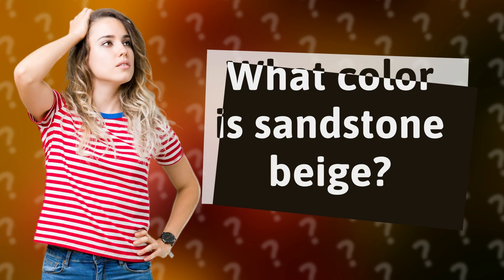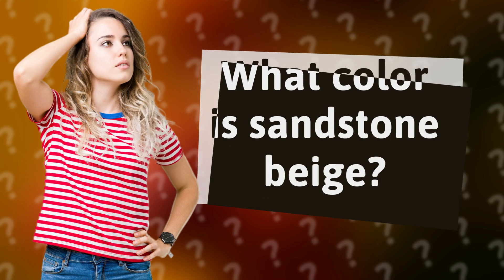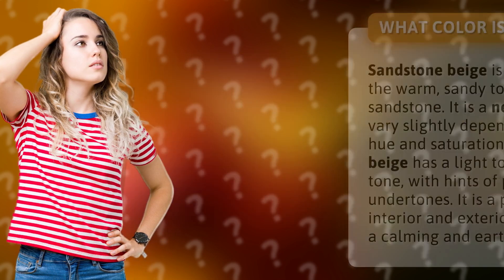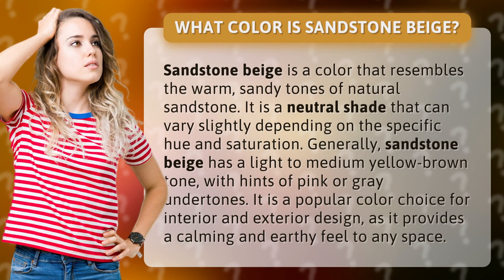What color is Sandstone Beige? Sandstone Beige is a color that resembles the warm, sandy tones of natural sandstone. It is a neutral shade that can vary slightly depending on the specific hue and saturation. Generally, Sandstone Beige has a light to medium yellow-brown tone, with hints of pink or gray undertones.